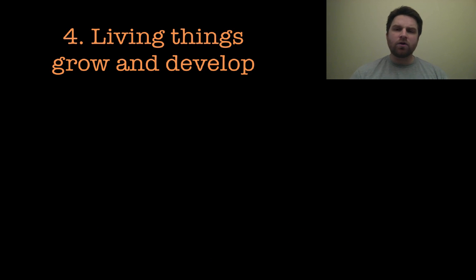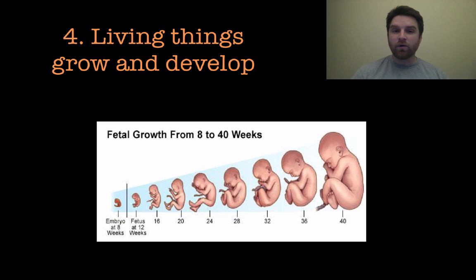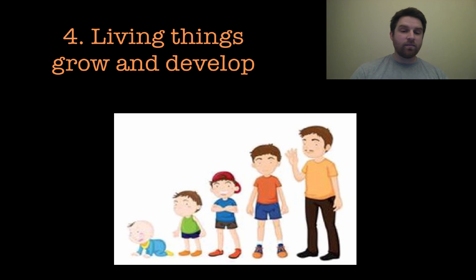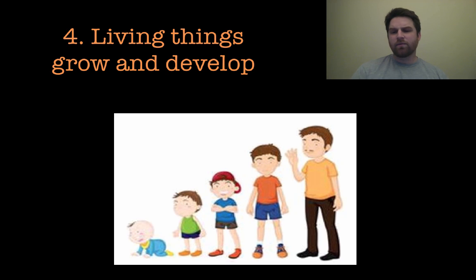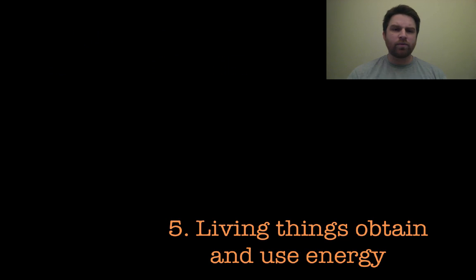Next, living things grow and develop. You have something growing from an embryo to a 40-week-old fetus and then it's born — a good example using just humans. Then the babies grow up to be, you know, a rather strange-looking man with an orange shirt and brown pants. Things are going to grow and develop and change a little bit over time.